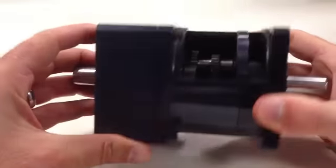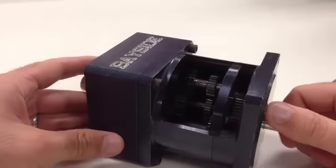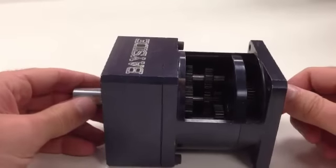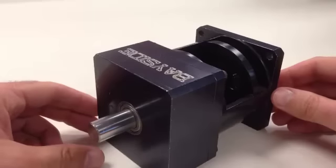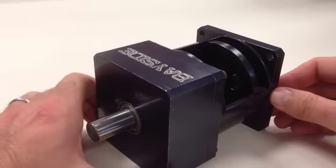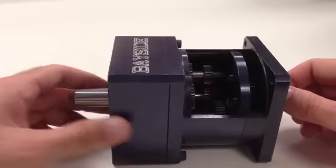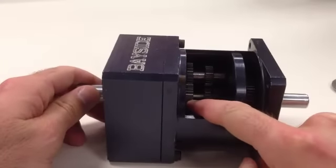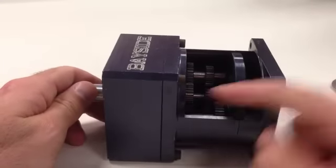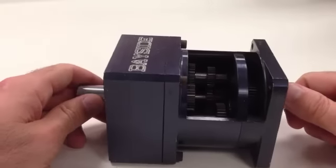This is a Bayside spur gear head. It's inline. This has been modified so it has an input shaft where a motor would normally mount into it. And here we have the input gear. This would normally clamp down onto the motor shaft.